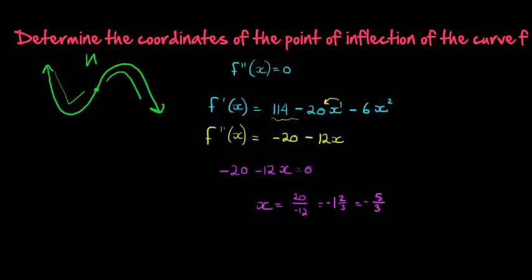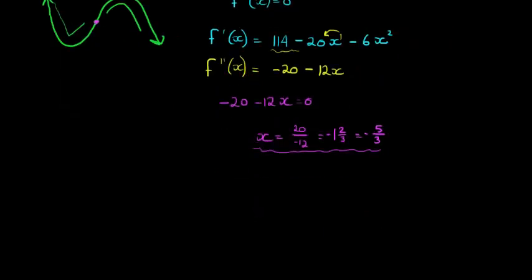There's only one inflection point, that's why we get one x value. There's only one inflection point where it stops being convex and starts being concave. To find the y value, we now know the x value is negative 5 over 3.